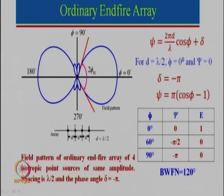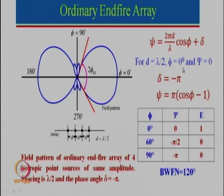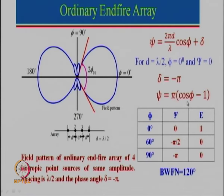Now let us consider ordinary end fire. Again with d=λ/2, we want beam maxima at φ=0°, which gives an end fire array. We force the condition ψ=0 at φ=0° to get maximum radiation, which gives δ = −π (180°). At φ=0°, cosφ=1, so 1−1=0, ψ=0, and the array factor equals 1. At φ=60°, cosφ=1/2 minus 1 gives −π/2, and the array factor evaluates to 0.